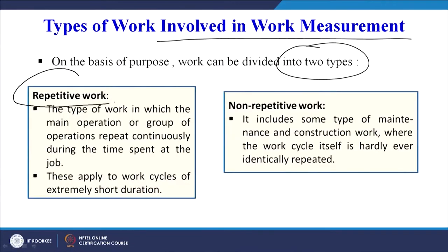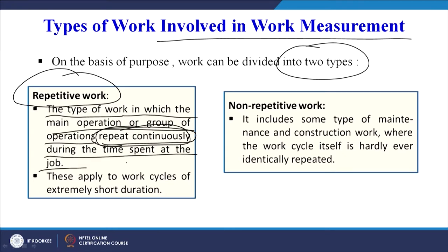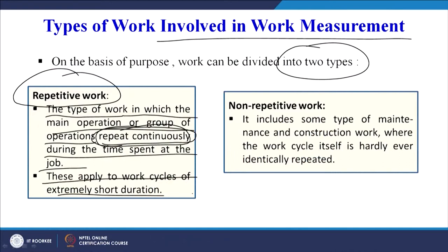The first type is repetitive work — the type of work in which the main operation or group of operations repeat continuously during the time spent at the job. These apply to work cycles of extremely short duration. For example, a person manually forging by hitting a metallic piece repeatedly — the work cycle is continuously repeating.